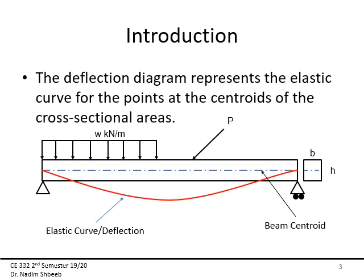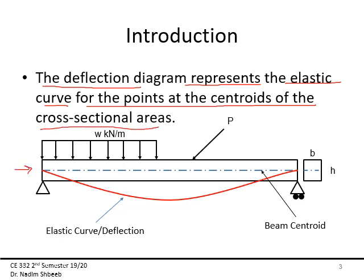Since I will not be drawing the deflection of the beam in 3D, I always represent the beam by a line, as you've seen when we draw the shear and bending moment diagram. The deflection diagram represents the elastic curve for the points at the centroids of the cross-sectional areas. For this beam with width b and height h, this deflection due to load P is representative of the centroid line.